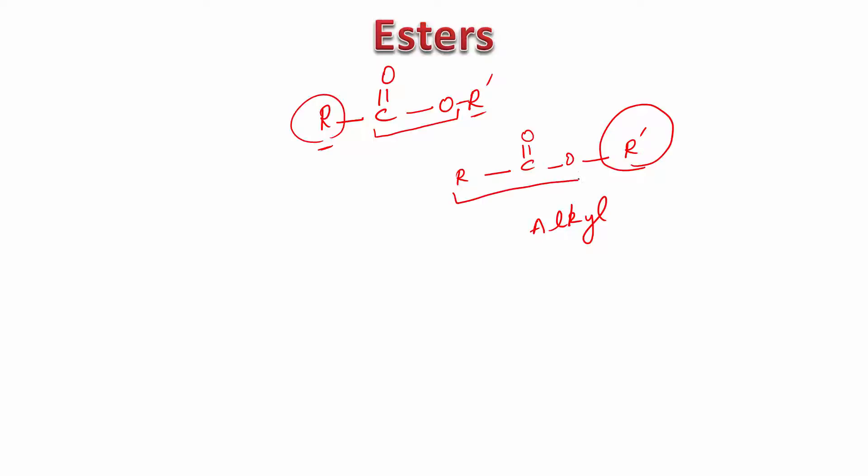And this part is named similar to the acid. Now how do you name this acid? This would be alkanoic acid. What you do is you remove this ick acid and you replace it with ATE. So this becomes alkanoate.